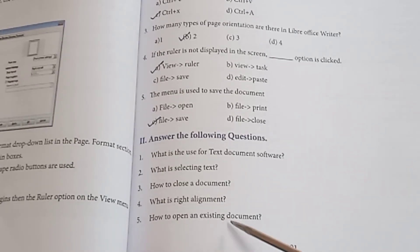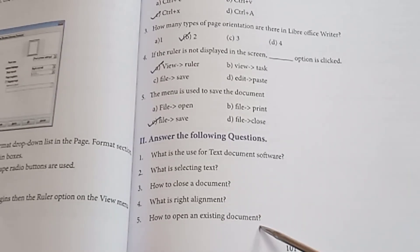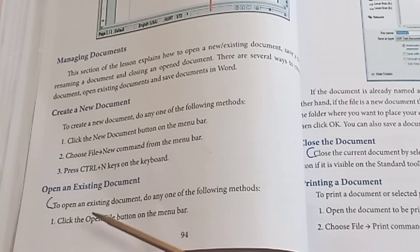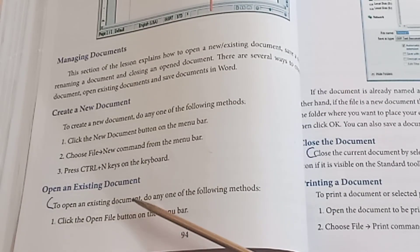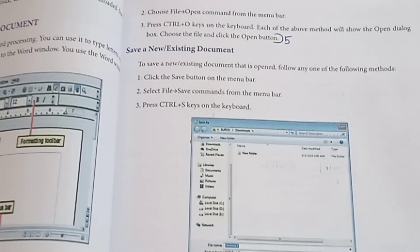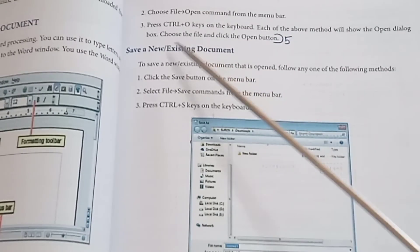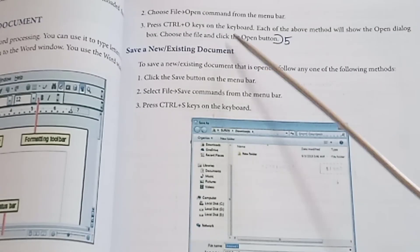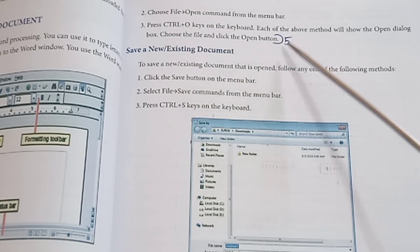How to open an existing document? Refer to page number 94. To open an existing document, navigate to the file location on page 95, choose the file, and click the Open button.